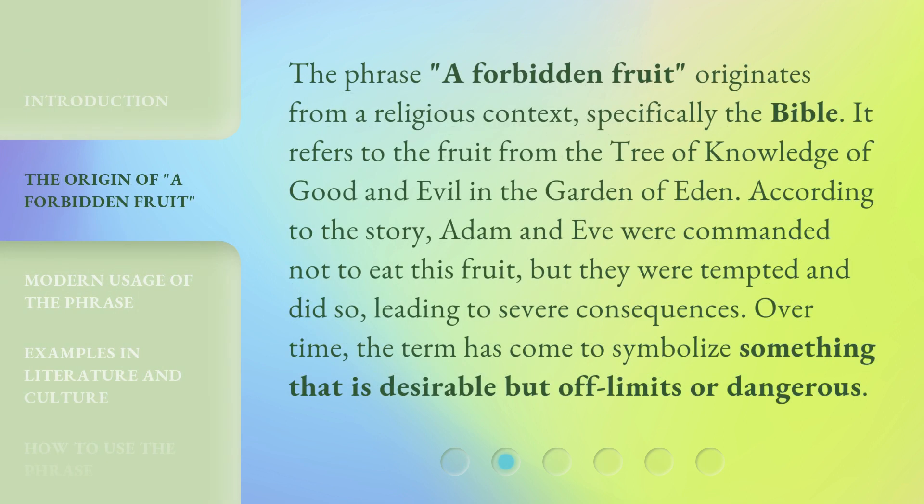The phrase 'a forbidden fruit' originates from a religious context, specifically the Bible. It refers to the fruit from the tree of knowledge of good and evil in the Garden of Eden. According to the story, Adam and Eve were commanded not to eat this fruit, but they were tempted and did so, leading to severe consequences. Over time, the term has come to symbolize something that is desirable but off-limits or dangerous.